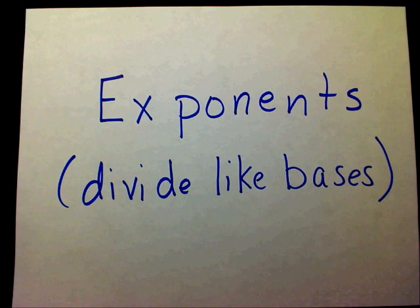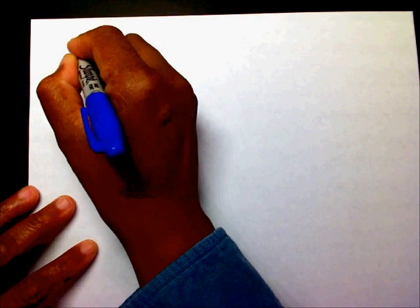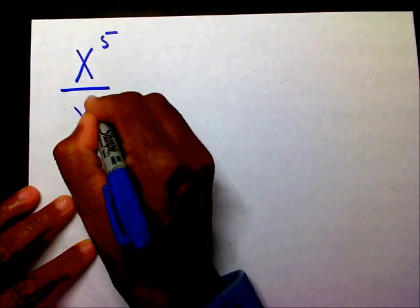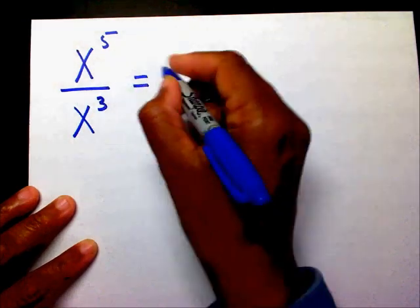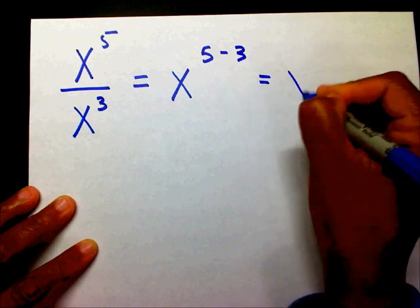Today we're going to divide exponents with like bases. The rule is: x to the fifth divided by x to the third equals x to the 5 minus 3, which equals x to the 2.